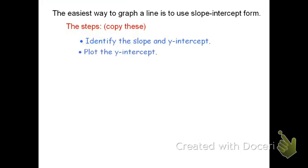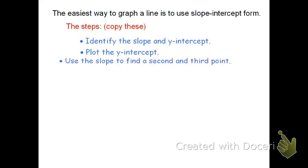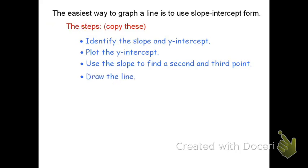Second, plot the y-intercept. This is the starting point we know for sure from the equation. Once we have the y-intercept point, use the slope to find a second and probably a third point. It's always best to have more than two points. Lastly, draw the line.